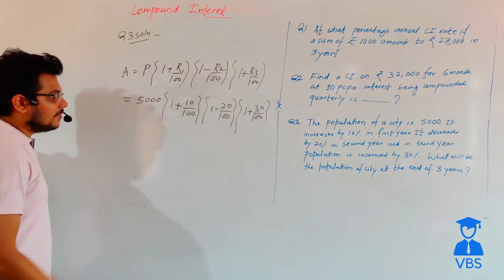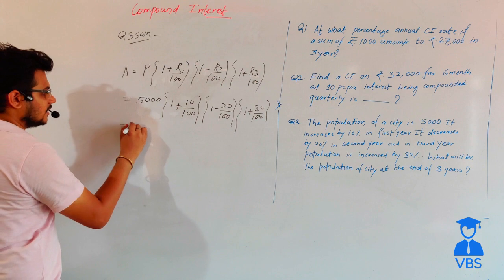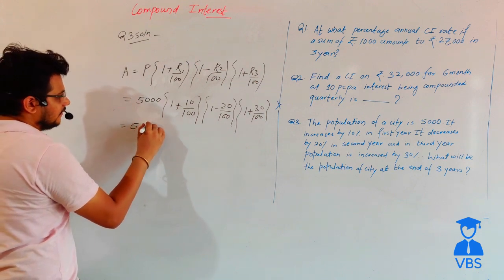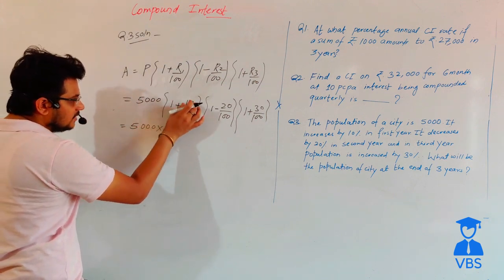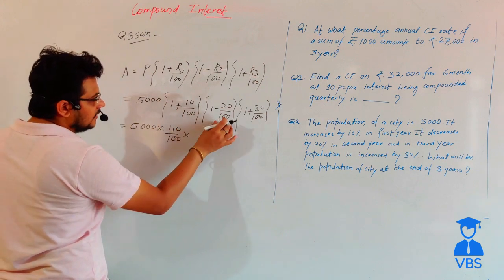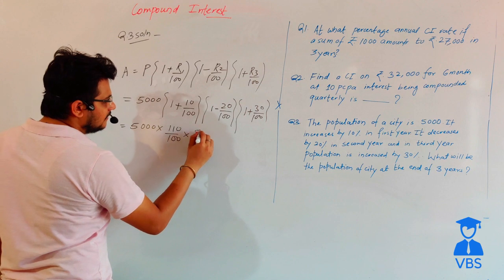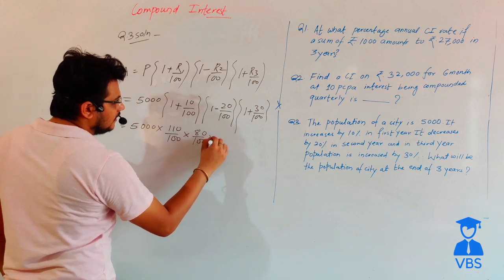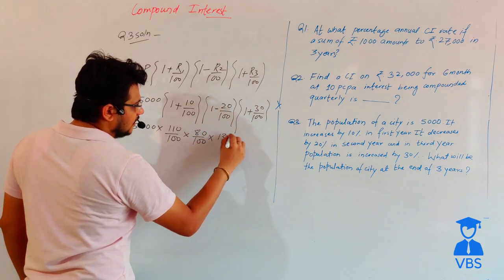Now we can simplify. 5000 times (100 + 10 = 110)/100, times (100 - 20 = 80)/100, times (130)/100.